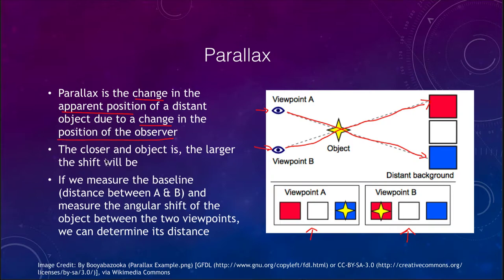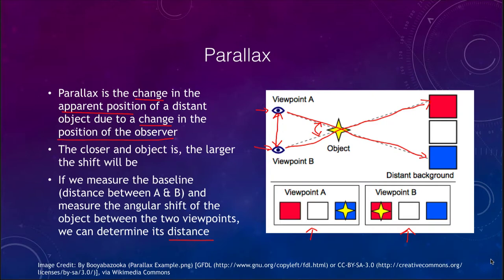The closer the object is, the larger the shift will be. An object very close to us will undergo a large shift, and a very distant object will appear to undergo a very small shift. If we measure the baseline — the distance between the two viewpoints — and we measure the angle, the shift that the object appears to undergo between those two viewpoints, we can then determine the distance to the object itself. It is a direct method we can use here on Earth for triangulation, looking at things from two different positions.